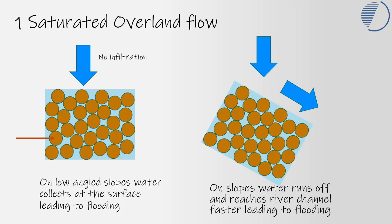Let's look at the first situation: saturated overland flow. Here you can see a soil and within that soil every pore space is filled with water, indicated by the blue background colour. This means that when more rain falls there's simply nowhere for that water to go into the soil, and therefore it starts to form a flow over the surface. This is even more dramatic where the surface of the land is sloped. On steeper angled slopes you rapidly get saturated overland flow, and that water runs straight into the river channels and often leads to flooding.